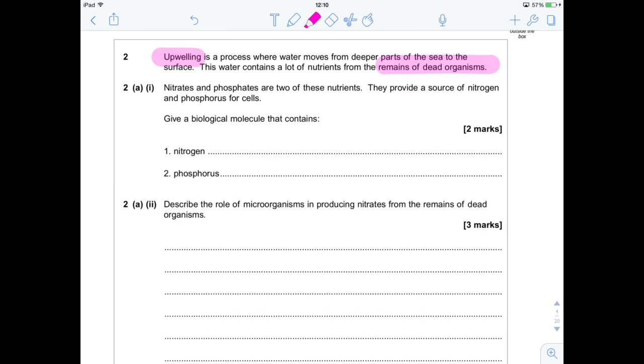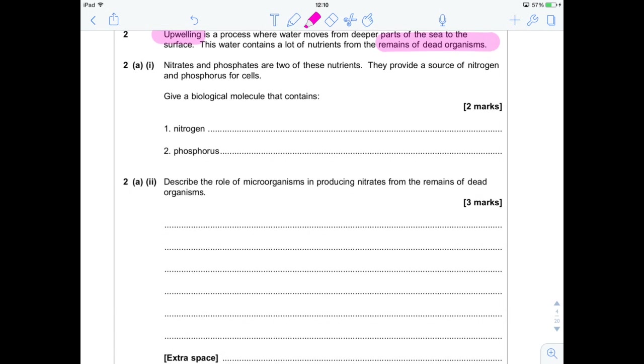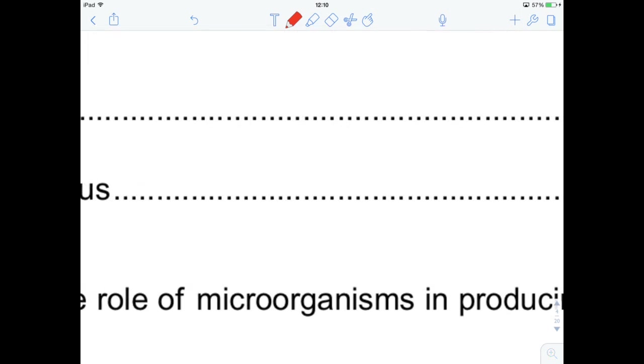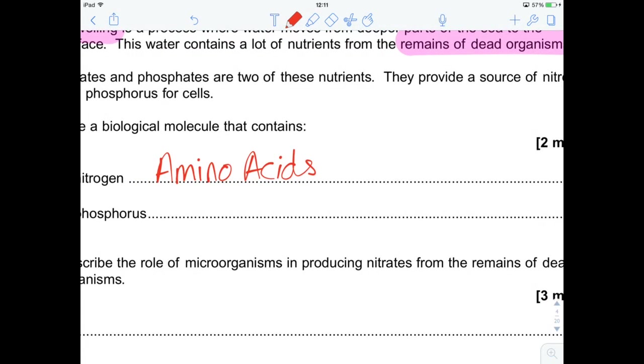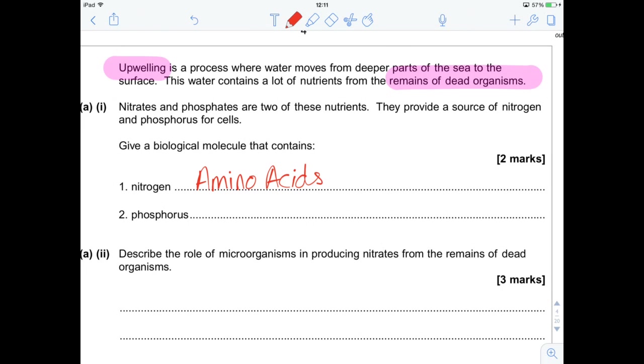Basically, the first question says, give a biological molecule that contains nitrogen and phosphorus. Nitrogen, nice and easy, amino acids from Unit 1. There are other things you could say, like polypeptides or whatever. Keep it straightforward, say amino acids, because we learned about that in Unit 1. If you're not sure about it, check out my video.